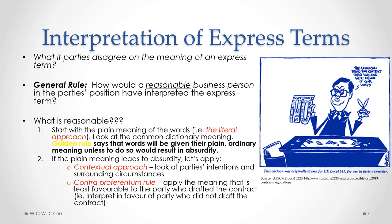These other interpretive approaches include the contextual approach, where we look beyond the dictionary definition to the parties' actual intentions and surrounding circumstances to determine what the parties intended the words to mean. A third approach is called the Contra Proferentum Rule, which says we apply the meaning of the word or phrase that is least favorable to the party who drafted the contract — or in other words, we interpret the words in favor of the party who did not draft the contract. We then consider all three approaches — literal, contextual, and Contra Proferentum — and return to the question: how would a reasonable business person in the party's position have interpreted the express term?